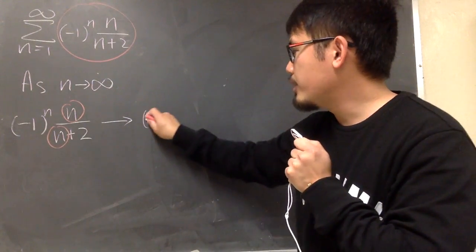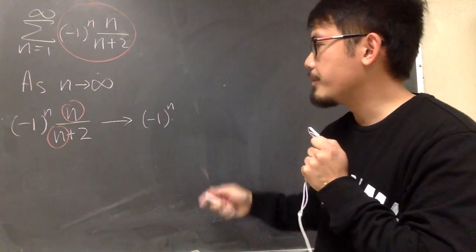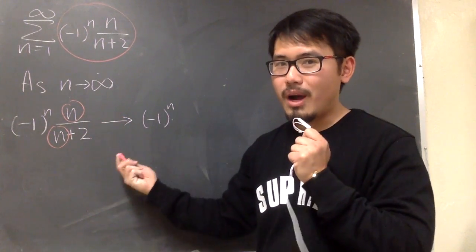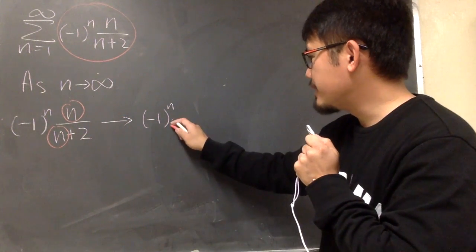So we know this will approach, let's put down this factor, parentheses, negative 1 to the nth power. And then for this part, we know this is just going to be approaching to 1. So we are pretty much multiplying this by 1.